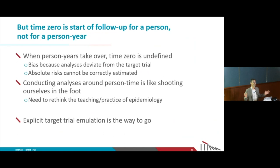Those two things are lost because now we're thinking of years, not of persons. The way to solve this is to do an explicit target trial emulation. Not everybody agrees, and some people have criticized this way of thinking about causal inference from observational data.